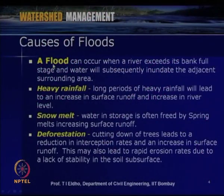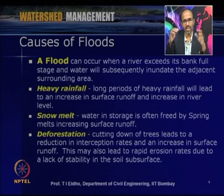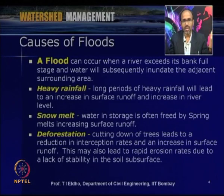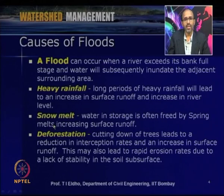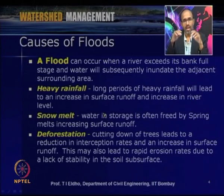Floods can occur when a river exceeds its bank-full stage and water subsequently inundates the adjacent surrounding area. The causes include heavy rainfall — long periods of heavy rainfall lead to an increase in surface runoff and river level. Snow melt is another cause: water stored as snow is freed by spring melts, increasing surface runoff, which can also cause flooding.